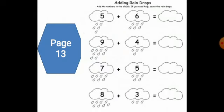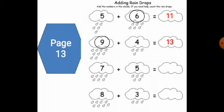Are you ready for the next exercise? We have five plus six. Circle the bigger number — six. Six in the mind, five on the hand. Count after six: seven, eight, nine, ten, eleven. Super. Next: nine plus four. Which number is bigger? Of course nine. Nine in the mind, four on the hand. Count after nine: ten, eleven, twelve, thirteen.